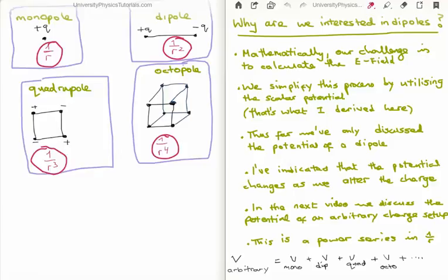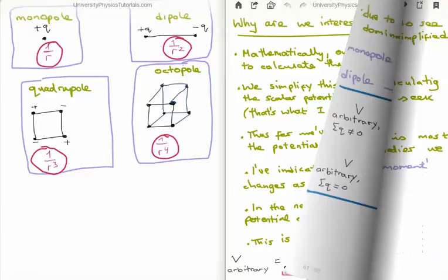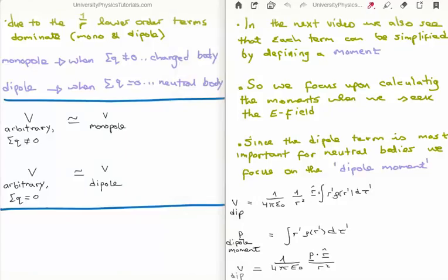If you know something about power series, you'll know that some terms naturally go to zero and some terms are naturally non-zero, depending on the setup you're talking about. The important point is that sometimes the most important contribution will be from the monopole, and other times from the dipole — these two contribute the majority of times. Higher order terms like the quadrupole, octopole, and so on, contribute more infrequently. Due to the powers of one over r, the lower order terms clearly dominate — one over r and one over r squared versus one over r to the hundred, for example.